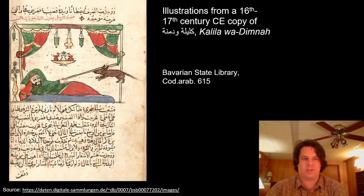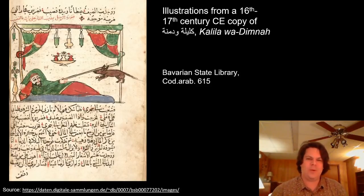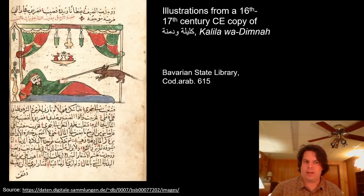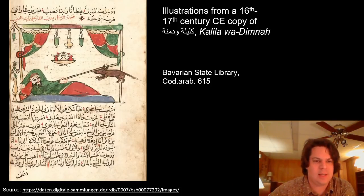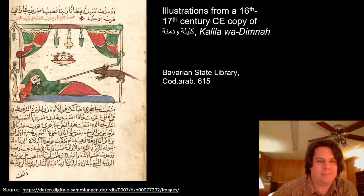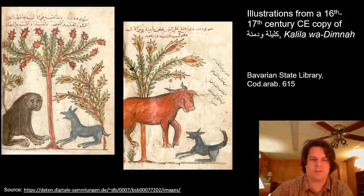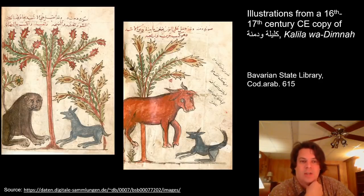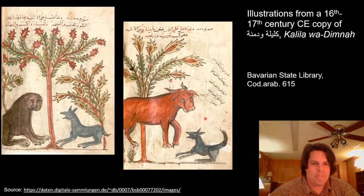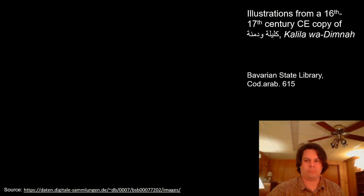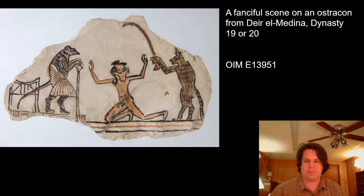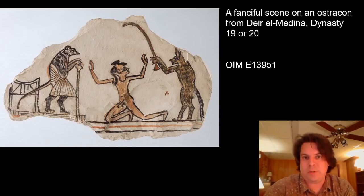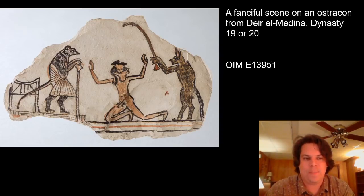Before moving on, a couple more illustrations from the Panchatantra. One is from a version transmitted via Syriac and Persian through Iran, called Kalila wa-Dimna — an adaptation and modification of the Panchatantra. One illustration shows a mouse eating a monk's food. Another illustrates the jackal trying to convince the lion not to stop being friends with a bull. We see these same kinds of vignettes in ancient Egypt — and this is something we actually have in the Oriental Institute.